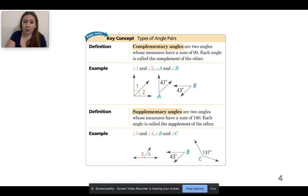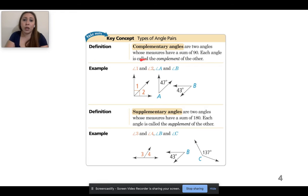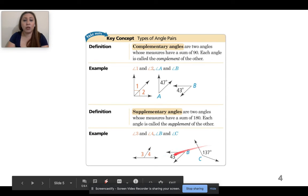So again, do you have to copy this page down? No, you don't. It's just so that you guys can have an extra all-together idea of what the key concepts look like. So complementary angles are two angles whose measures have a sum of 90. Each angle is called the complement of the other. So angle one plus angle two gives me the whole angle, which equals 90. Supplementary angles are two angles whose measures have a sum of 180.